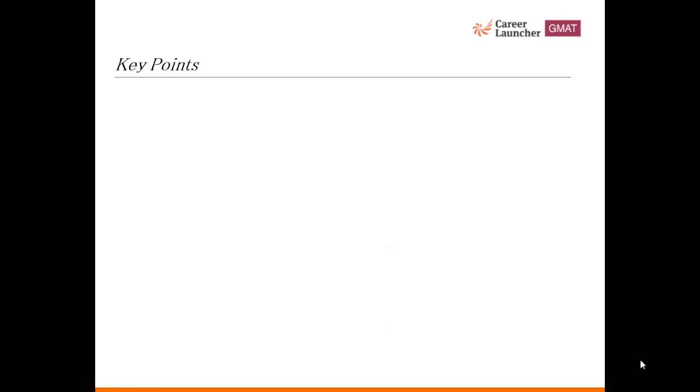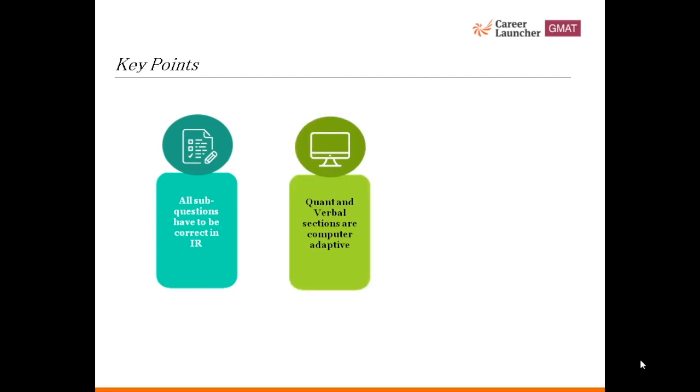To wrap up, let's look at key points around GMAT score. So remember, it's either everything or nothing on IR section. You have to get all sub-questions right in order to get a point. Quant and verbal sections are computer adaptive. Computer gives you more difficult questions if you get a question right and vice versa to accurately measure your ability. The GMAT total score of 800 is based on your performance in quant and verbal sections only.